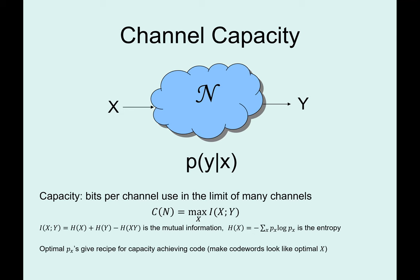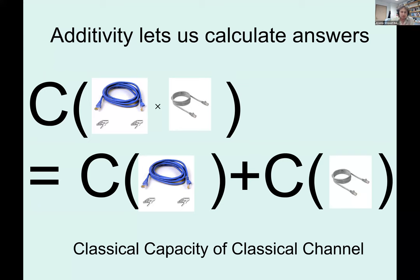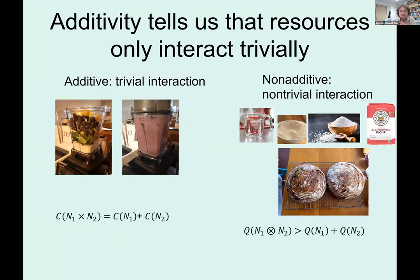A key feature is additivity of the classical capacity. If you evaluate the classical capacity on two different channels used together, the capacity of those two channels is just the sum of the individual capacities. This tells us that two classical channels don't interact in any non-trivial way — the best strategy is to use each one optimally and not worry about how they're connected. This is like making a smoothie: if you want it to taste more like pineapple, put more pineapple in; more yogurt-y, put more yogurt in. Classical capacities just add.